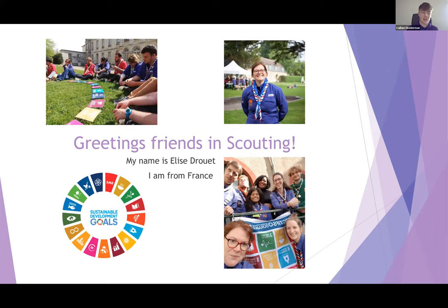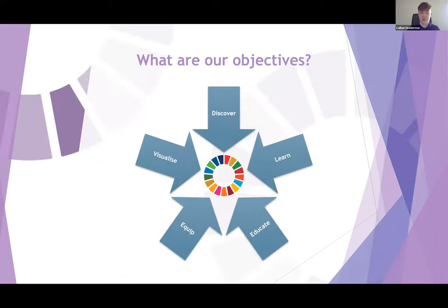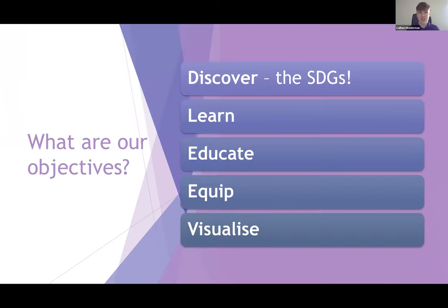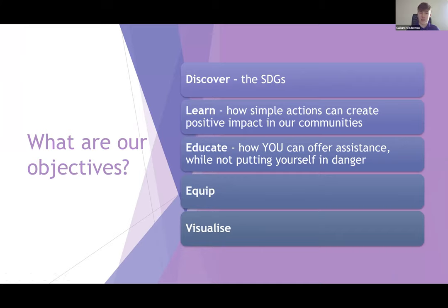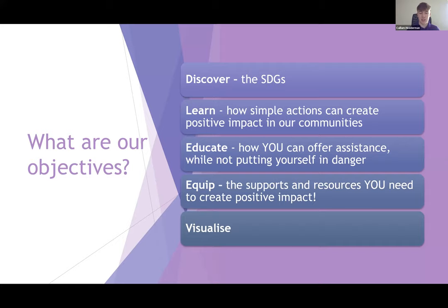For this session, we have five main objectives. I've made this diagram to show you all that they will feed towards contributing to the SDGs. We have Discover, Learn, Educate, Equip and Visualise. Objective one is Discover — we're going to take you on a journey to discover the Sustainable Development Goals, why they're here, and how we can link them to Scouting. You are all going to learn how simple actions can create positive impact in our communities, be educated on how you can offer assistance while not putting yourself in danger during this current pandemic, be equipped with supports and resources to create positive impact, and finally visualise how you can act now.